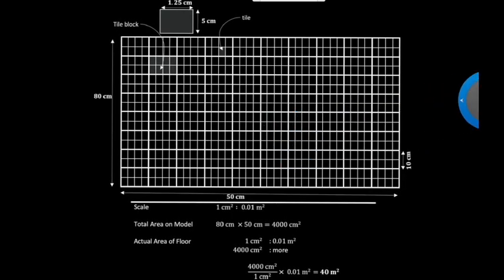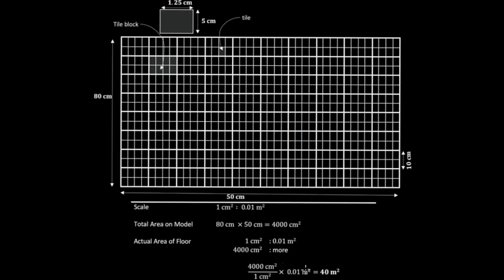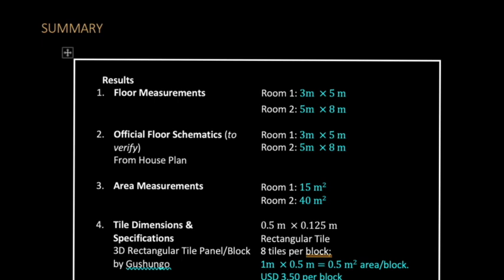The calculation for the sitting room is similar to what we did previously. You use your area scale factor, get the total area in square centimeters, then demonstrate how to get the actual floor area using simple proportion.